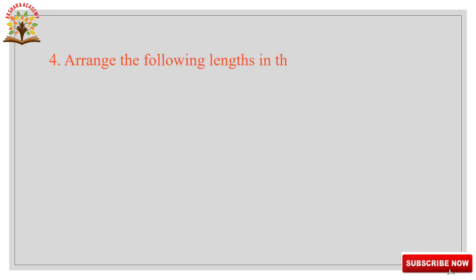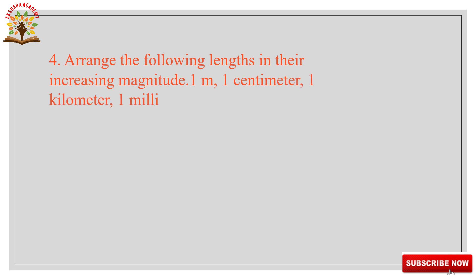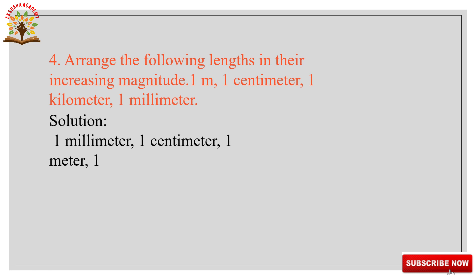Question 4: Arrange the following lengths in increasing magnitude: 1 meter, 1 centimeter, 1 kilometer, 1 millimeter. Solution: The smallest is millimeter, then centimeter, then meter, and finally kilometer. So the increasing order is: millimeter, centimeter, meter, kilometer.